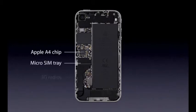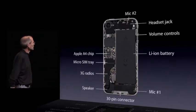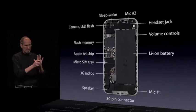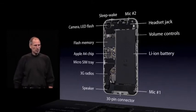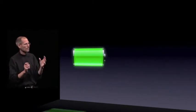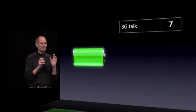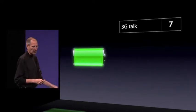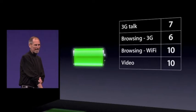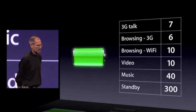Let me point out some of the other things. There's the micro SIM — we went to the micro SIM because it's smaller, we need the space. The radios, the connectors. You can see that the biggest single component in the phone is the battery. We've been able to make the battery a little bit bigger. Because of that, and because the A4 is so good with power management, we've been able to improve battery life: up to 40% more talk time on 3G — from 5 hours to 7 hours — 6 hours of 3G browsing, 10 hours of Wi-Fi browsing, 10 hours of video, 40 hours of music, and 300 hours of standby. We're very pleased with this.